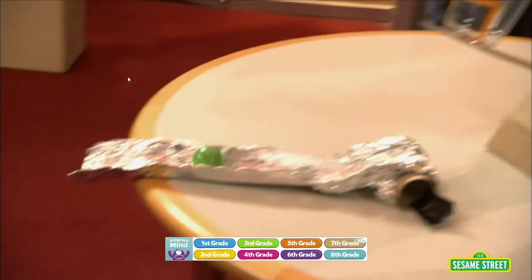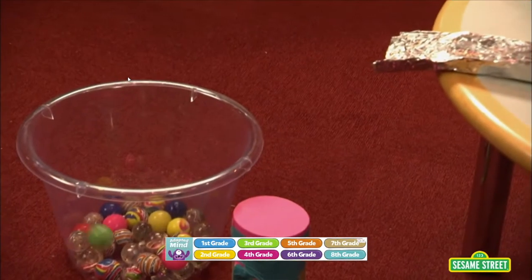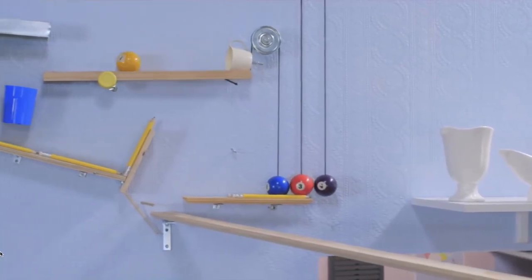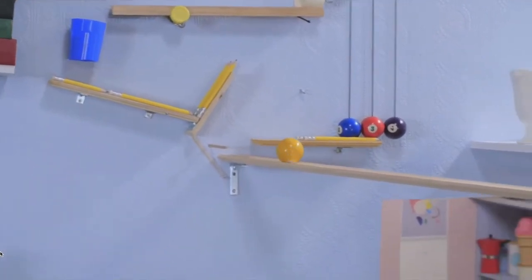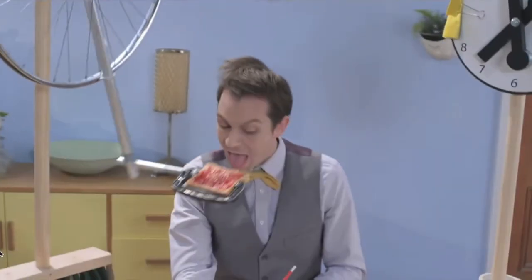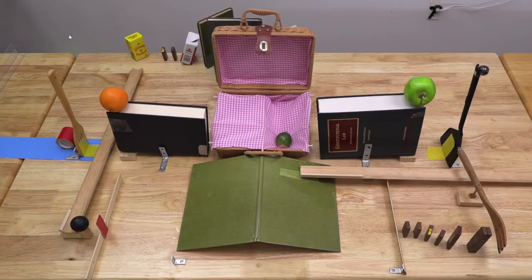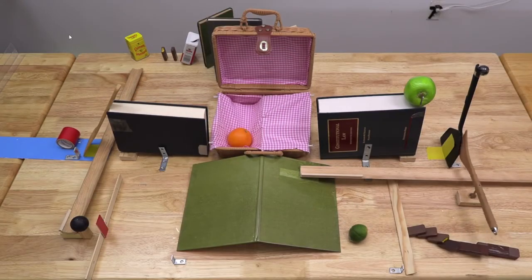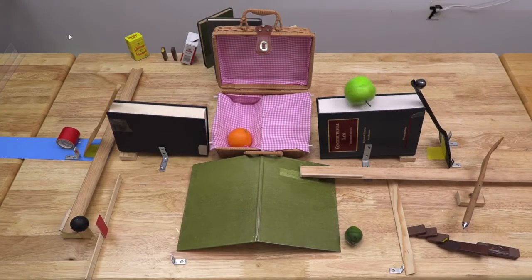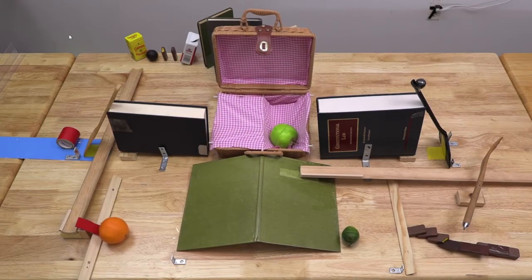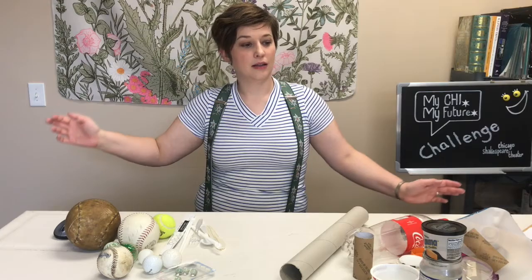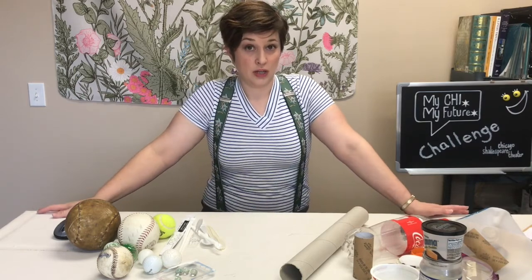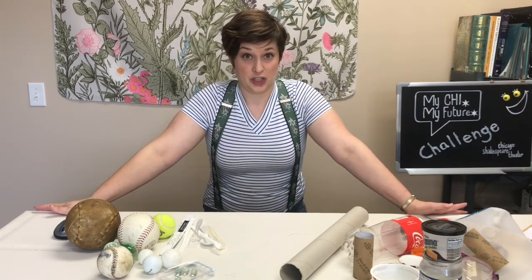Here are some other examples of Rube Goldberg machines in action. Every time one element meets another, we call that a transfer of energy. Sometimes the balls or moving objects trigger things to move backwards or to engage some other object onto the next relevant energy transfer.